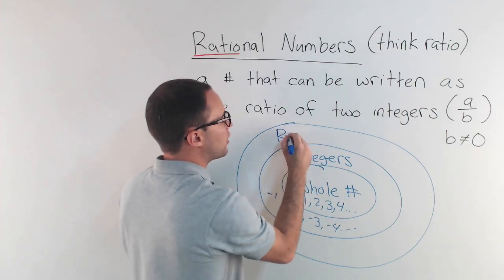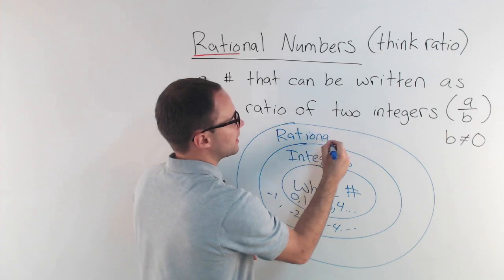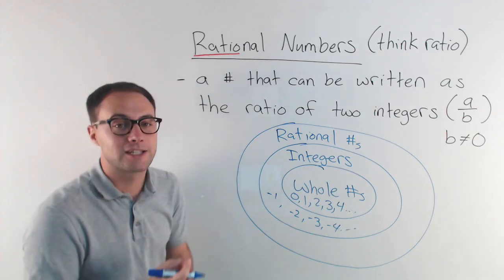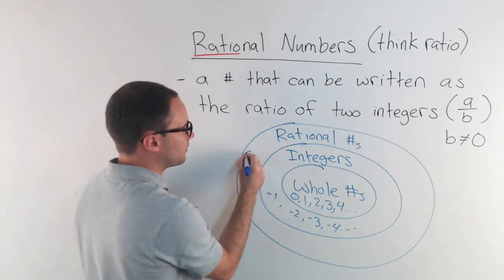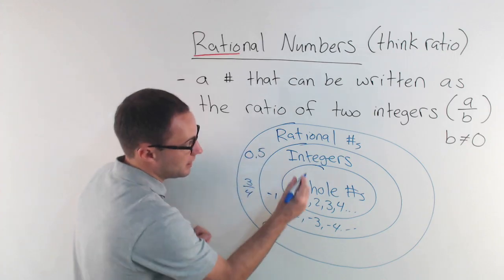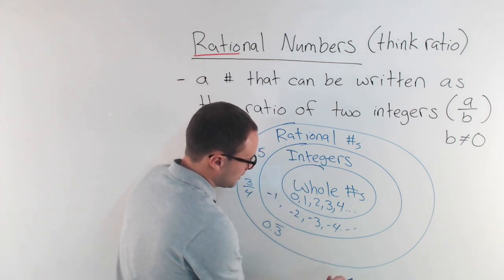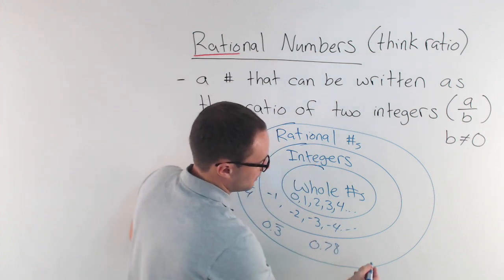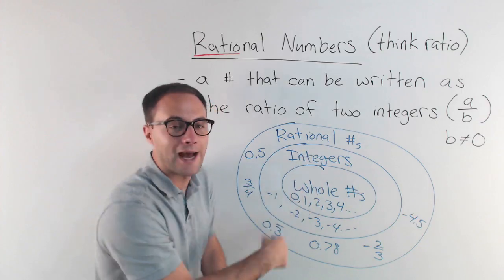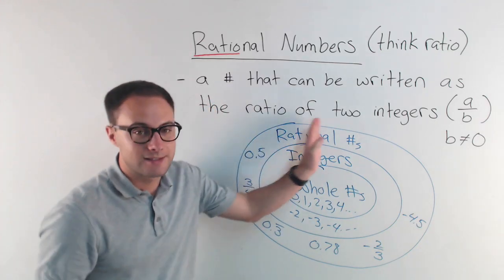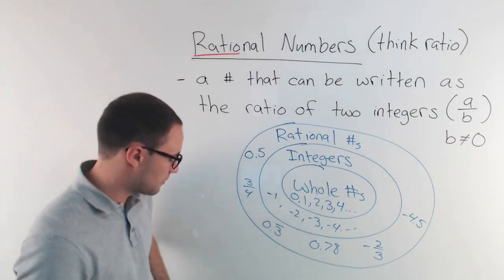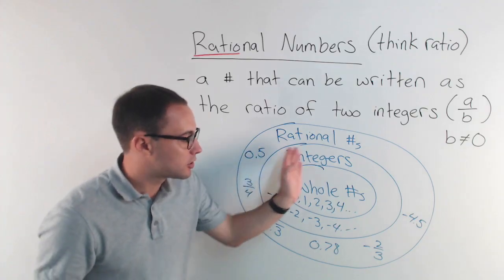Rational numbers includes all the whole numbers and all integers, but now we're also going to talk about fractions and decimals. So 0.534, 0.3 repeating, 0.78, negative two-thirds, negative 4.5 — those are all rational numbers. That's important — hopefully that helps break down the difference between whole numbers, integers, and rational numbers.